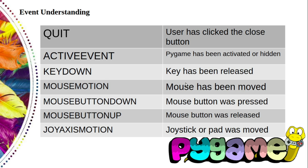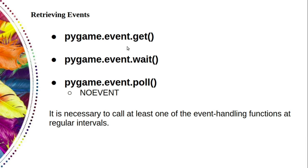In the hello world program, we called pygame.event.get to retrieve all the events and remove them from the queue, which is like opening the door and letting everyone in. This is probably the best way to deal with events because it ensures that we have handled everything before we go on to drawing something to the screen.